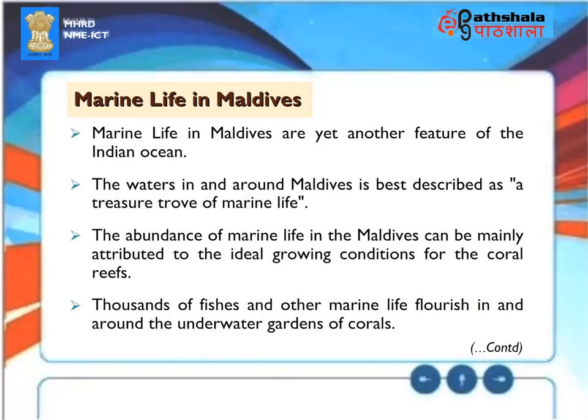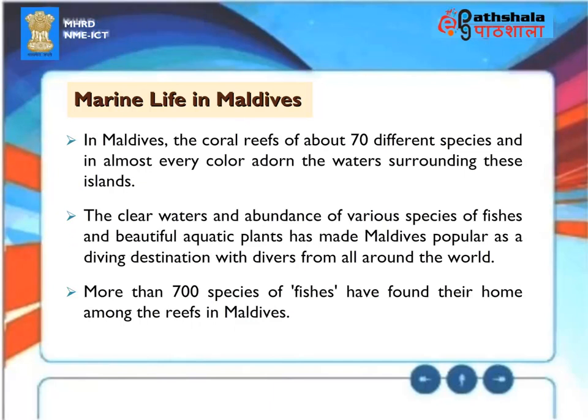Marine Life in Maldives. The waters in and around the Maldives are best described as a treasure trove of marine life. The abundance of marine life is mainly attributed to ideal growing conditions for coral reefs. Thousands of fishes and other marine life flourish in and around underwater coral gardens. In the Maldives, about 70 different species of coral in almost every color adorn the surrounding waters. The clear waters and abundance of fish species and aquatic plants have made the Maldives a popular diving destination. More than 700 species of fishes have found their home among the reefs.